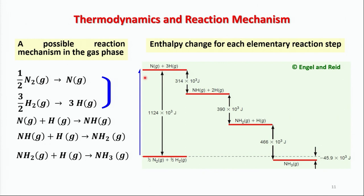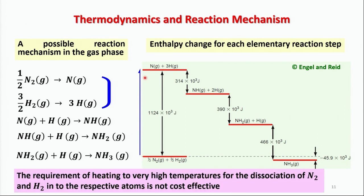This is not a commercially viable solution. Supplying approximately 1124 kJ of energy to convert ½ mole of N₂ and 3/2 moles of H₂ into atomic nitrogen and hydrogen in the gas phase is far too costly to achieve an optimum cost of production.